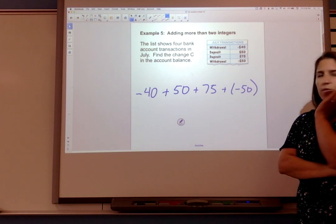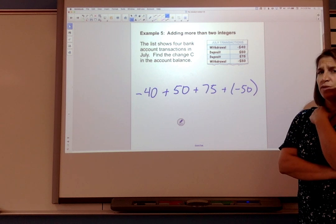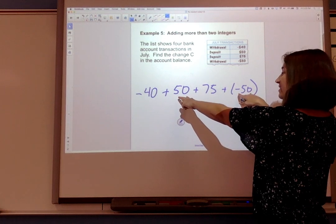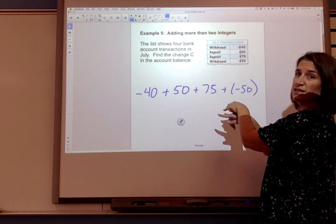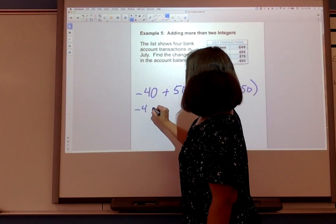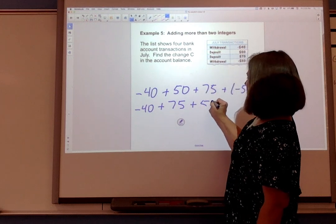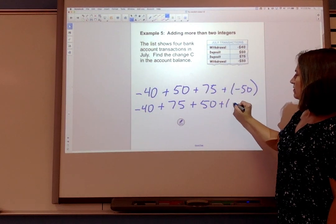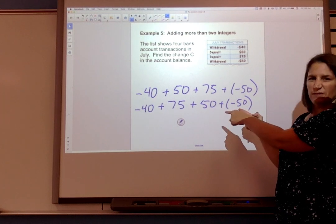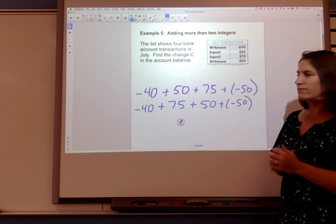Now let's think about what order we want to do this. We know that addition is commutative. We can add the numbers in any order we like. I kind of would like to add these two together first because I know they're going to cancel out to zero. So I'm going to say -40 + 75 + 50 + (-50). Let's deal with that first. 50 + (-50) is zero because those two numbers are additive inverses.